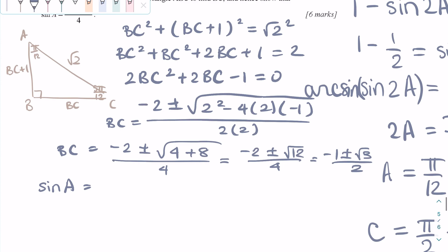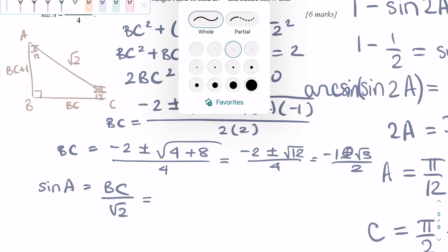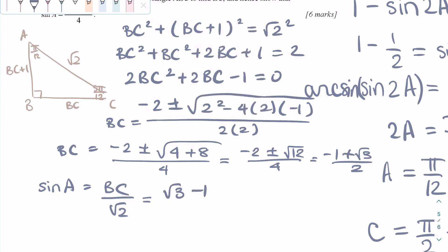Now, to get back to the question, we need to show what sine A is. Sine A is opposite over hypotenuse, so BC over square root of 2. We already found that BC is square root of 3 minus 1 over 2, and all of that over square root of 2.